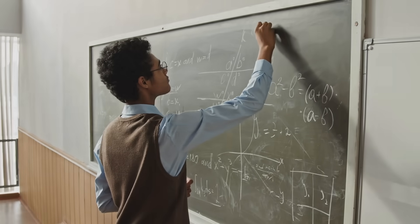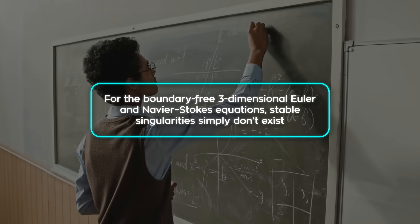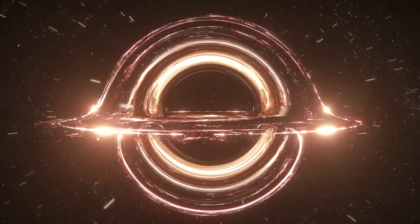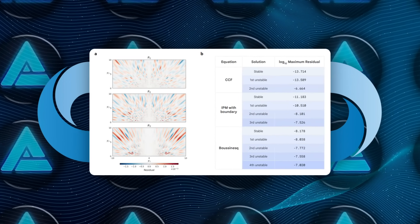Mathematicians have long suspected that for the boundary-free, three-dimensional Euler and Navier-Stokes equations, stable singularities simply don't exist. That's why finding unstable ones is such a big deal. They might look fragile, but they reveal deep truths about the structure of the equations themselves.